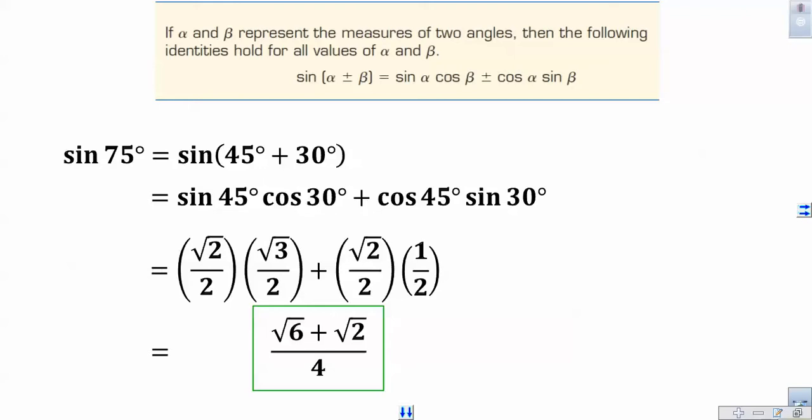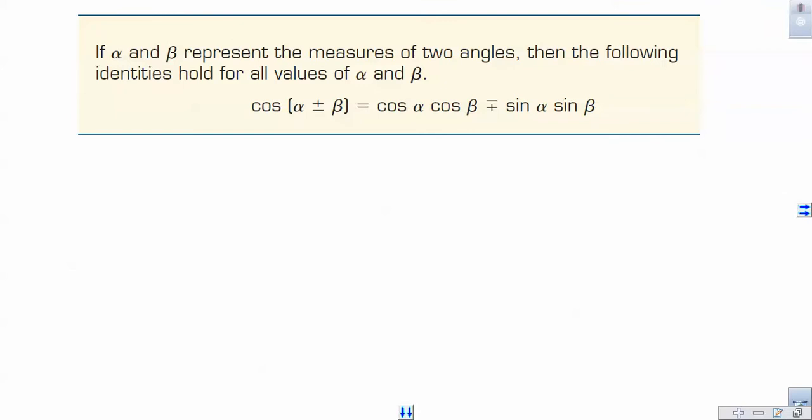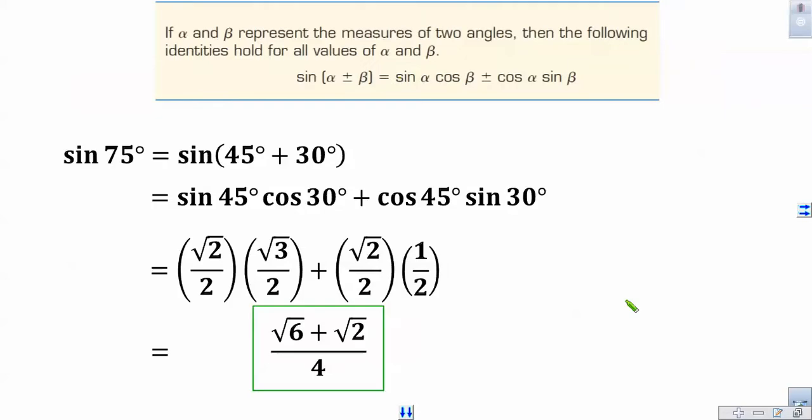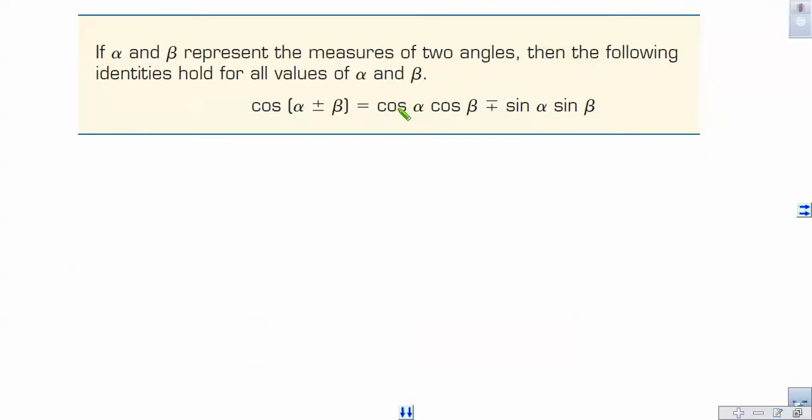Now let's take a look at the cosine version of this sums and differences. Something jumps out at me as different right away. Notice the cadence is different. But sine, if we go back here, sine, it was sine, cosine, cosine, sine. Notice here it's cosine, cosine, sine, sine. That is different.